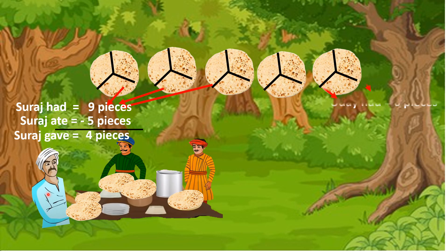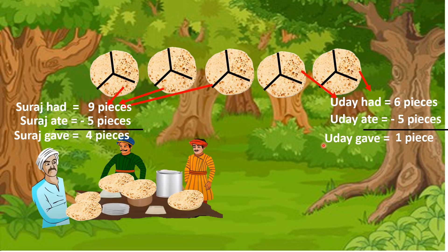Coming to Uday — Uday was having two rotis, three pieces each, so six pieces total. Out of that six, Uday himself ate five pieces. So six minus five is one piece. Uday's contribution was only one piece of roti to Sham.